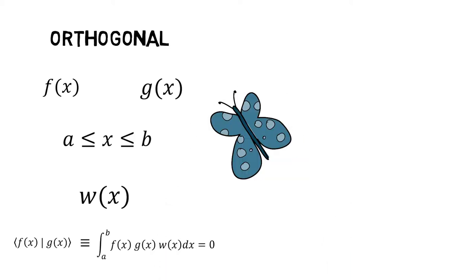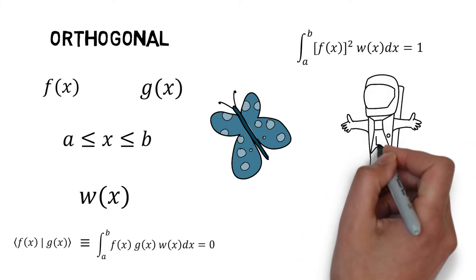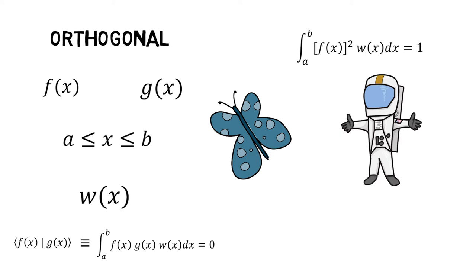If, in addition, the integral of [f(x)]²w(x)dx from a to b is equal to one and the integral of [g(x)]²w(x)dx from a to b is equal to one also, then the functions f and g are said to be orthonormal.